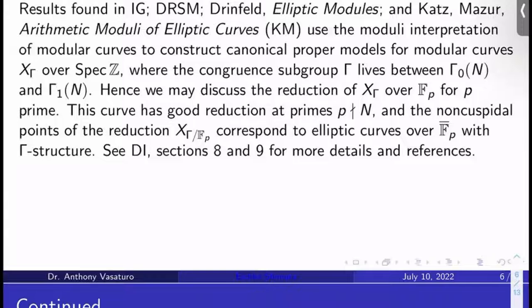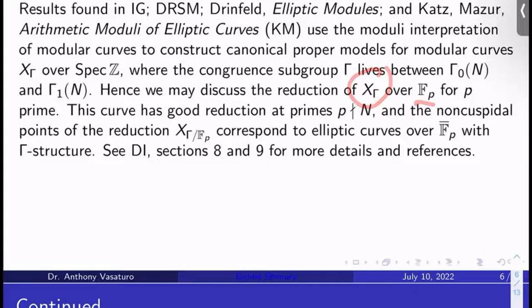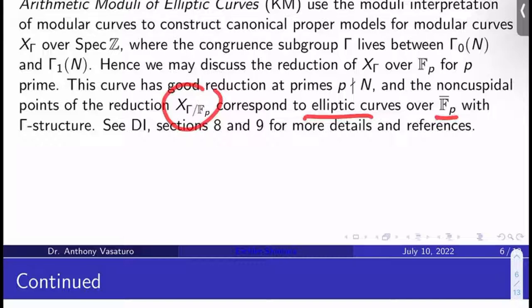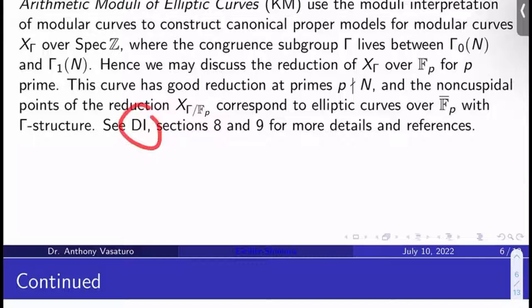Since I have these canonical proper models over ℤ, I can discuss their reductions — the reduction of X_Γ over 𝔽_p for p prime. This curve has good reduction at primes p not dividing M by Igusa's work. And as you might expect — though you have to prove this — the non-cuspidal points of the reduction correspond to elliptic curves over 𝔽̄_p with Γ-structure, just as you would think. Diamond-Shurman sections 8 and 9 is a great reference for this, and it provides a lot more references inside it.